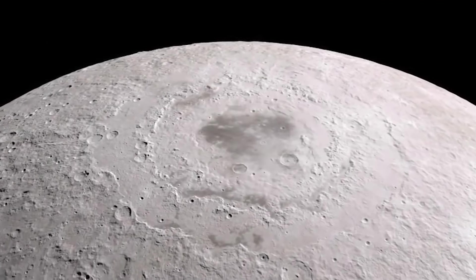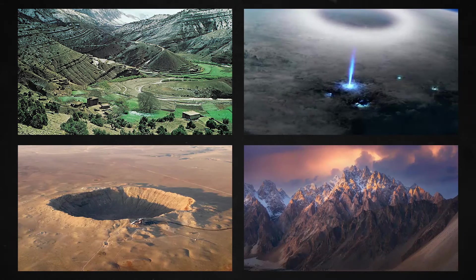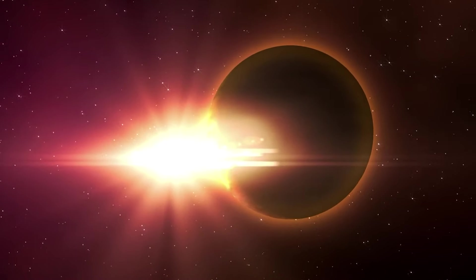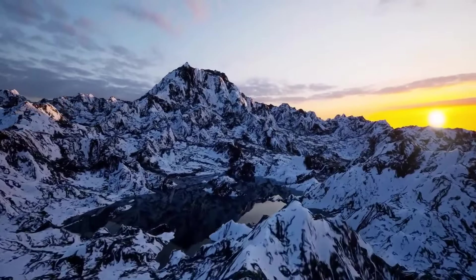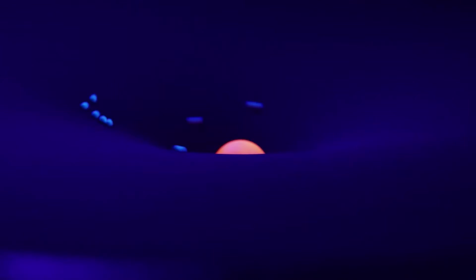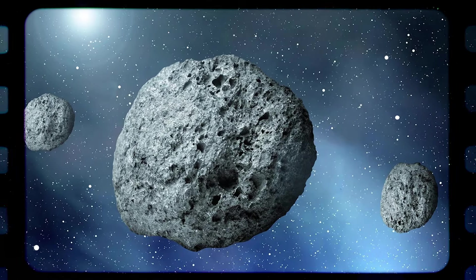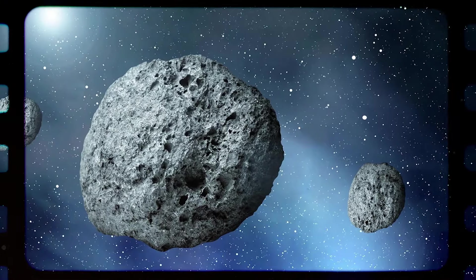These larger moons often possess distinct surface features such as craters, mountains, valleys and in some cases atmospheres. However, smaller moons, which are often irregularly shaped, might lack significant geological activity but still play essential roles in the gravitational interactions within their planetary systems. Moons can be captured asteroids or comets, formed through accretion processes, or created via collisions with their parent bodies.